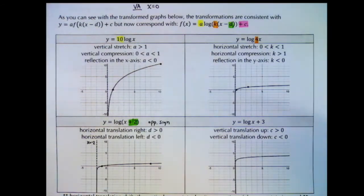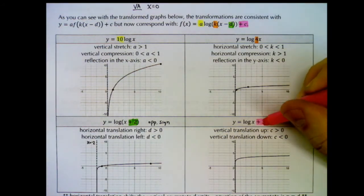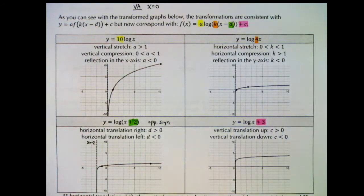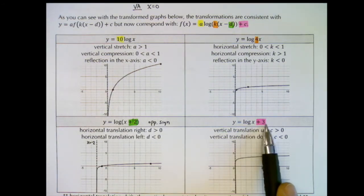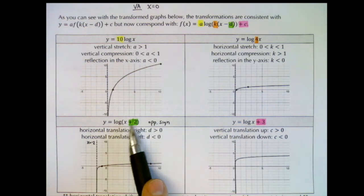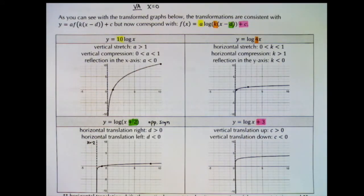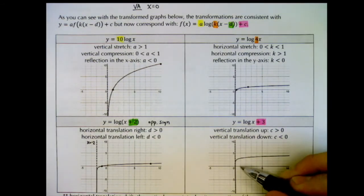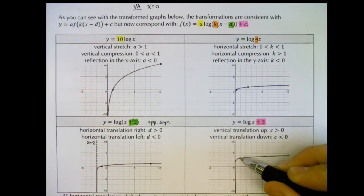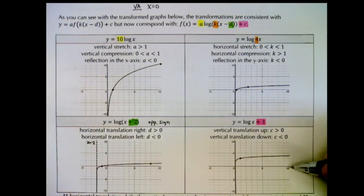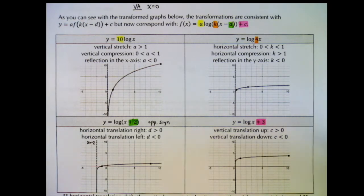Our last transformation is a vertical shift: we have plus 3, which is the c value on the outside of the log. To distinguish between values inside and outside the log, we use brackets — a bracket around 'x plus 2' means that 2 is inside the log and is a d value; no bracket means the value is outside and is a c value. Shifting up 3 moves (1, 0) to (1, 3) and moves (10, 1) to (10, 4).